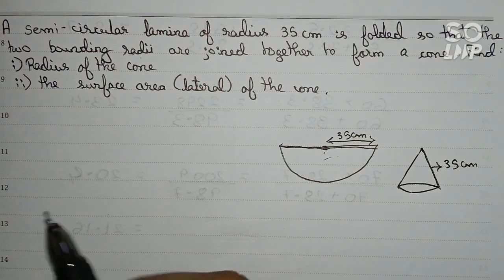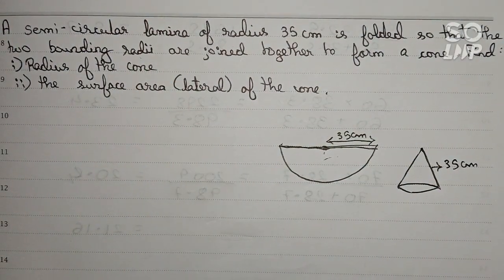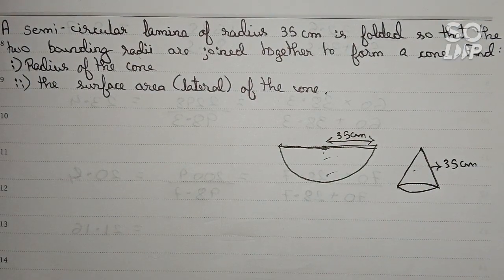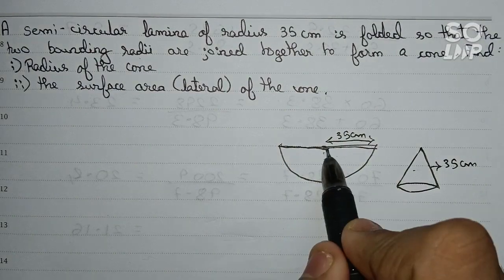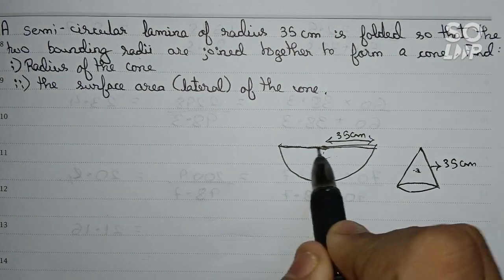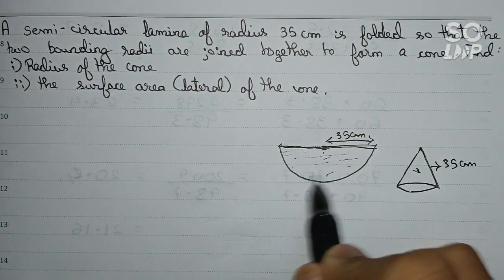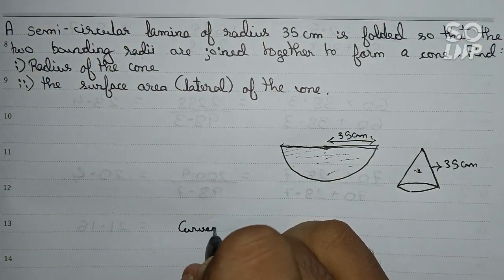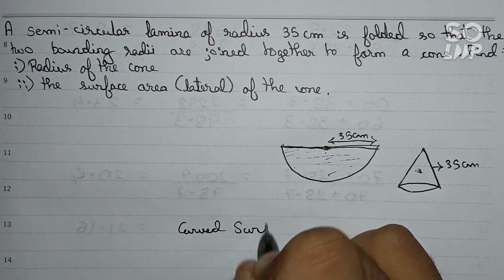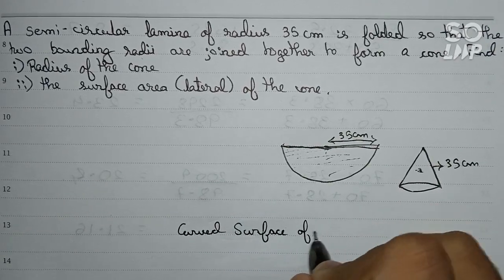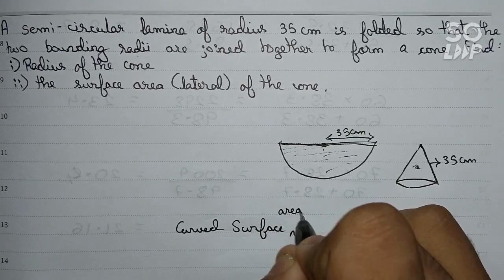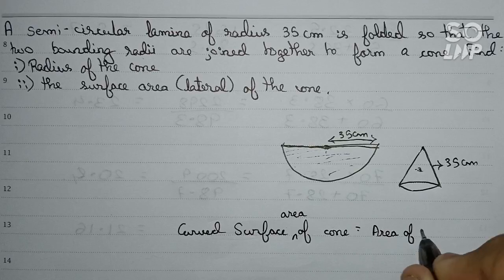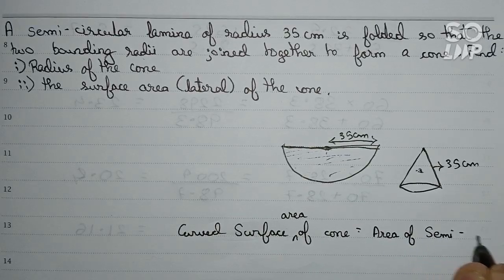Now we have to find out the radius of the cone. One thing is common between the semicircle and the cone — the curved surface area. The curved surface area of the cone will be equal to the area of the semicircle.